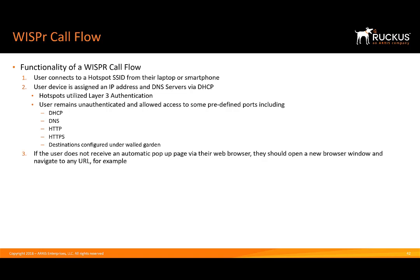Typically, the client device is going to pop a browser window up automatically. Sometimes that doesn't happen, so you'll need to open a browser and manually navigate to a website of your choosing. We're going to use Ruckus Networks as an example, but note that we're talking about an HTTPS site. Sometimes HTTPS will cause issues, so you need to go to a known non-HTTPS or plain HTTP site. A great site for this is example.com — it's clean HTTP with none of the HTTPS concerns.